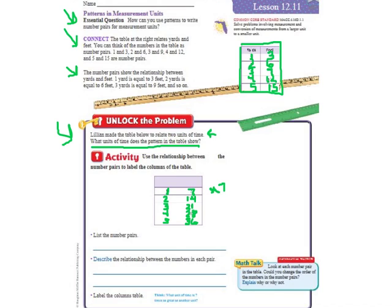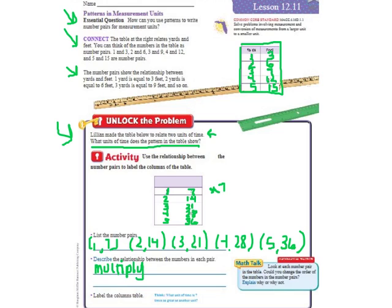First of all, it says list the number pairs. We've got one and seven as a pair, two and fourteen as a pair, three and twenty-one as a pair, four and twenty-eight, and finally five and thirty-five. Describe the relationship between the numbers in each pair. Well, we are multiplying by seven each time, so it's seven times greater.